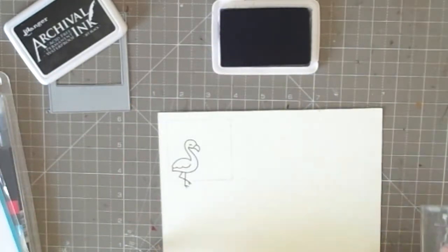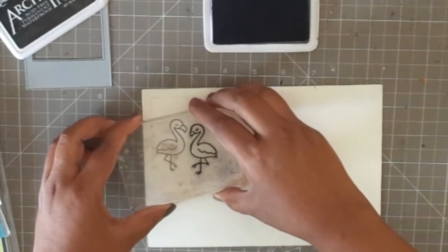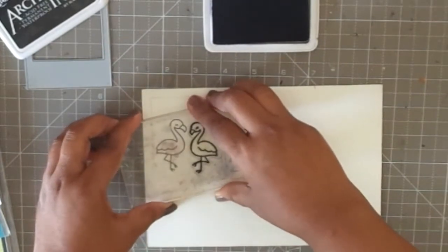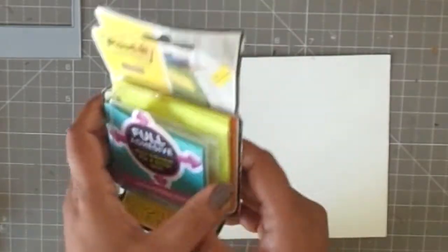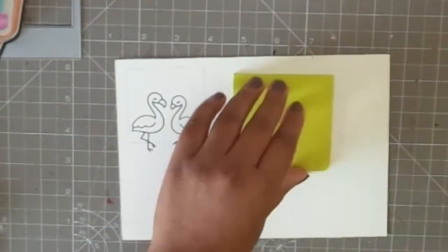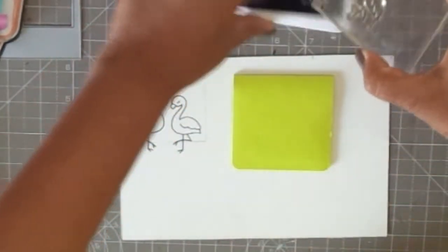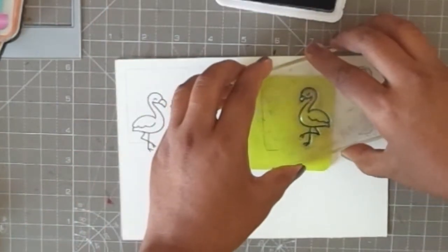I'm stamping the two flamingos. I want to create a little sunset love scene with this Polaroid and I will be creating the scene using some masking today. Masking is basically protecting your front images and working on the background at the same time.